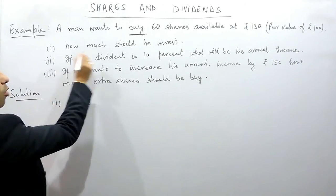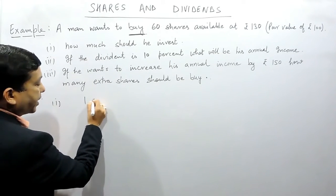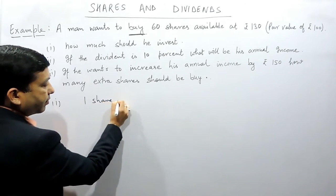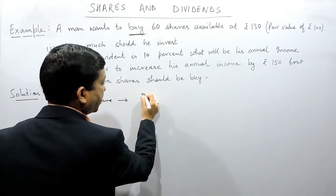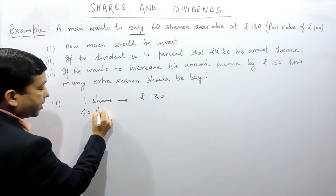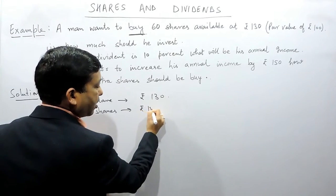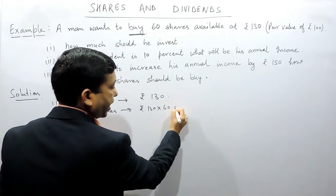The first part goes: how much should he invest? Definitely, if he wants to purchase one share he has to invest rupees 130. So when the person has to buy 60 shares, the investment will be rupees 130 × 60, that is rupees 7800.